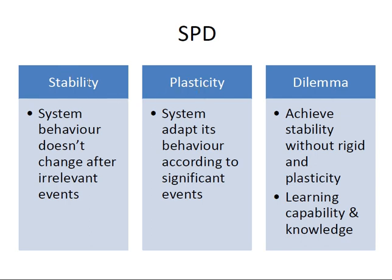In stability, the system is static in nature. The dilemma is the interference of stability and plasticity together. Whenever this interference exists, the system has to be trained. The system should have knowledge of the previous response so that when switching back, it can automatically predict and deliver the appropriate output.